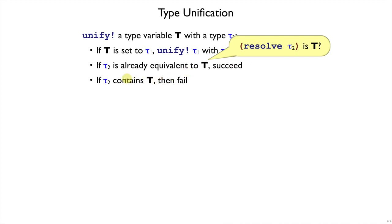Otherwise, we do the occurs check. We make sure that tau2 doesn't contain T. It's already not equivalent to T, because we've got past that second bullet. But if it contains T, then the occurs check should fail. So we're going to have our occurs function there.